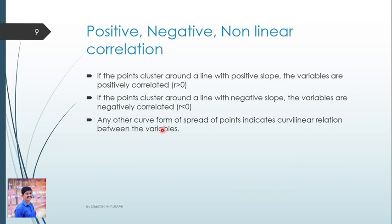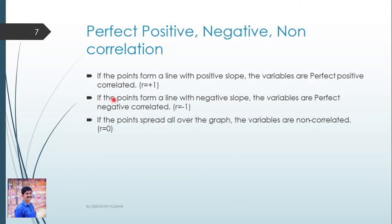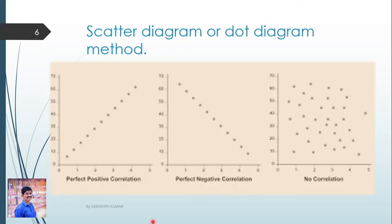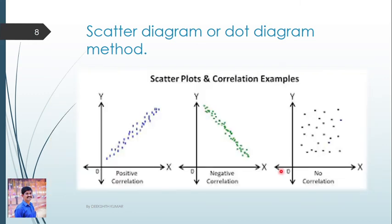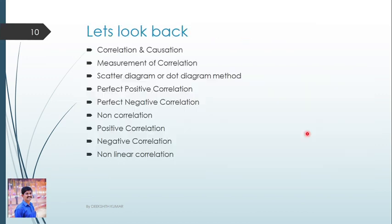To summarize: we have seen Non-Correlation, Positive Correlation, Negative Correlation, and No Correlation diagrams. In this video we studied Correlation and Causation — the cause and effect relationship — and also the measurement of correlation using the scatter diagram method.